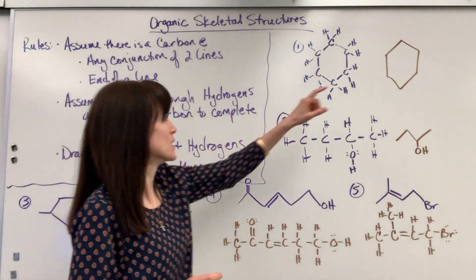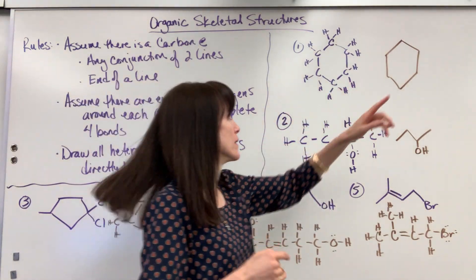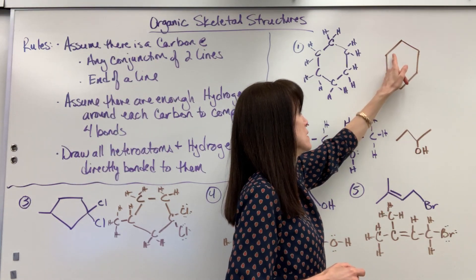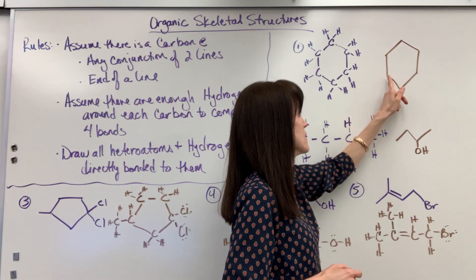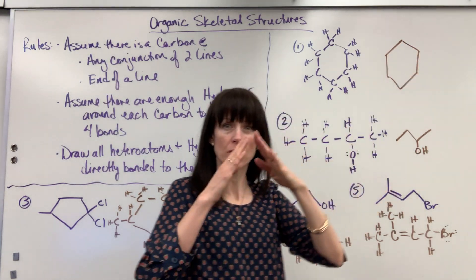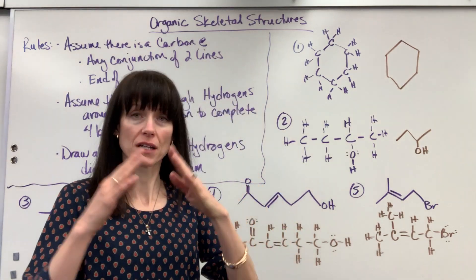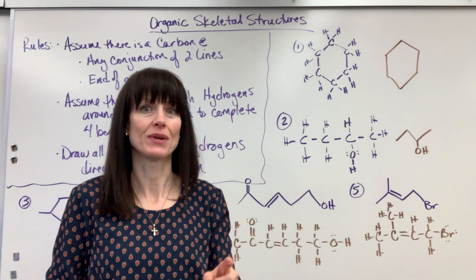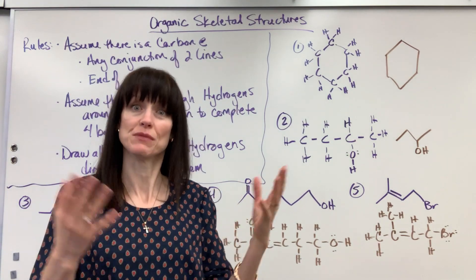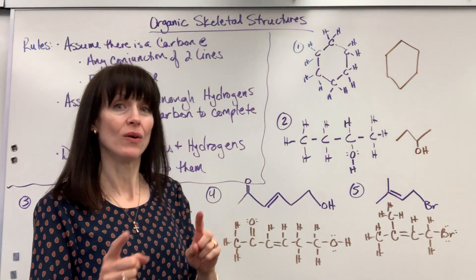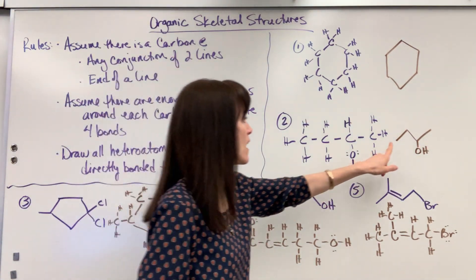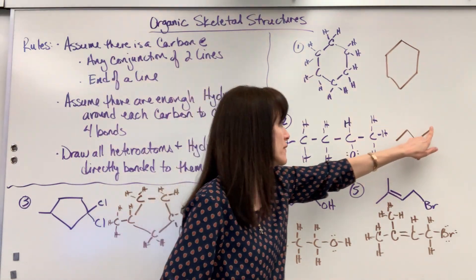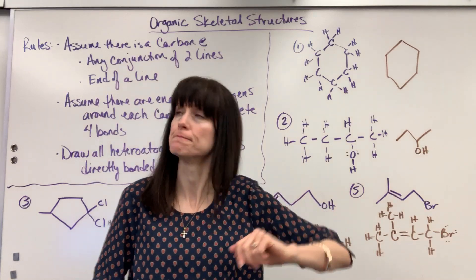The first rule is that you're going to assume that carbon is at any conjunction of two lines and at the end of a line. The conjunction is going to be where you see a bend — that means in that bend, that conjunction, there's a carbon there. Wherever you see the bend, that conjunction of two lines coming together is going to be a carbon. Now when the line ends, that also indicates a carbon, so there would be a carbon right there at the end.